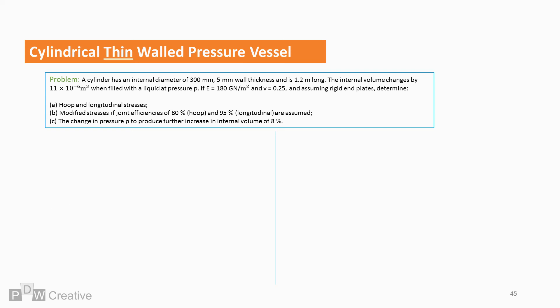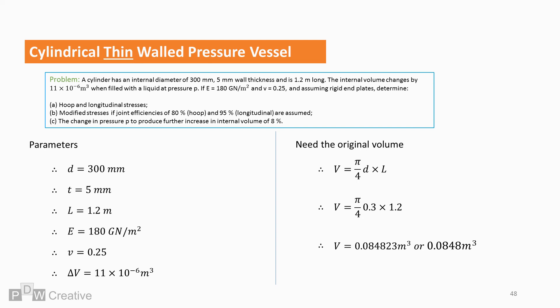Now let's list the parameters. So we have the change in volume, but we need the original volume to go any further. Let's calculate it. So V in terms of volume equals pi over 4 times diameter times length. The volume is 0.0848 metres cubed. Now we can find the pressure using both original and change in volume.